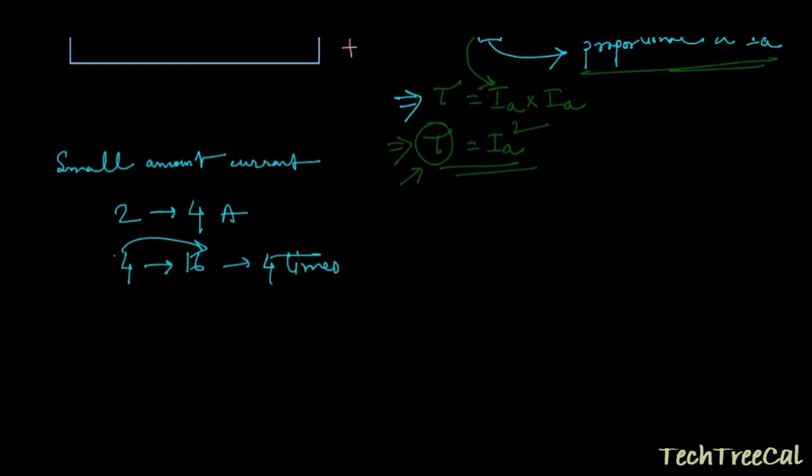That means you are increasing the current by 2 times and you are getting the equivalent torque increased by 4 times. A double increase in armature current is giving you quadruple increase in your torque. That's why the DC series motor gives you a high starting torque.